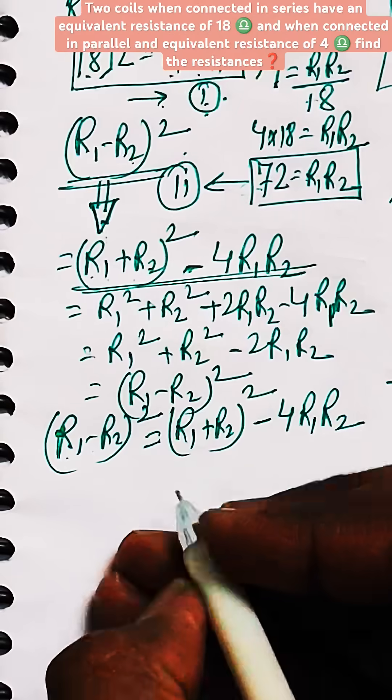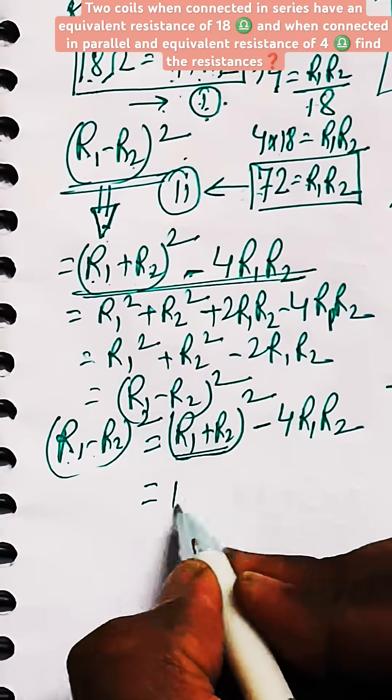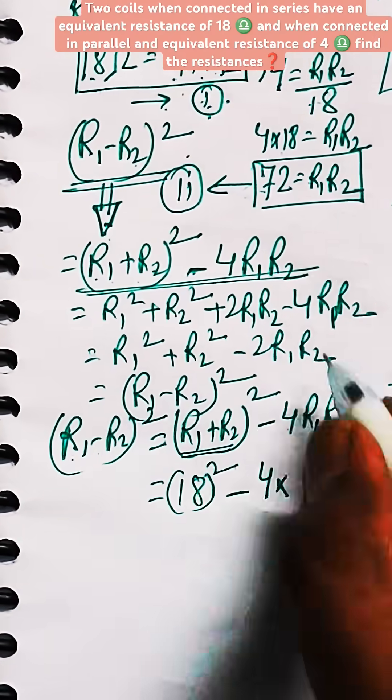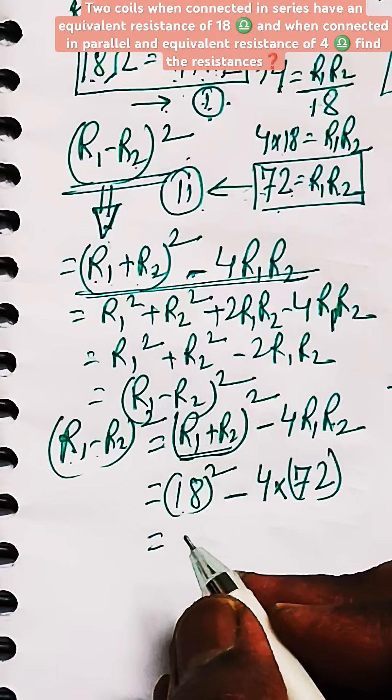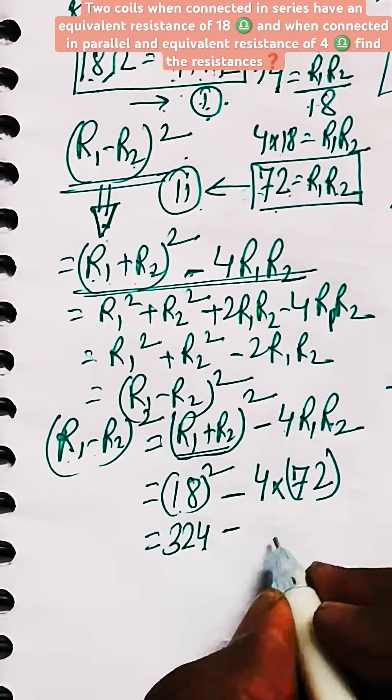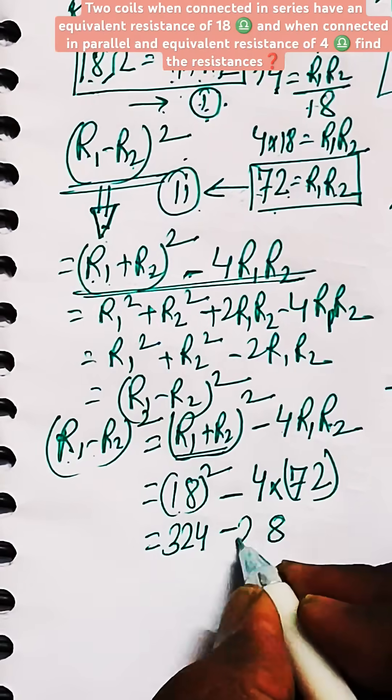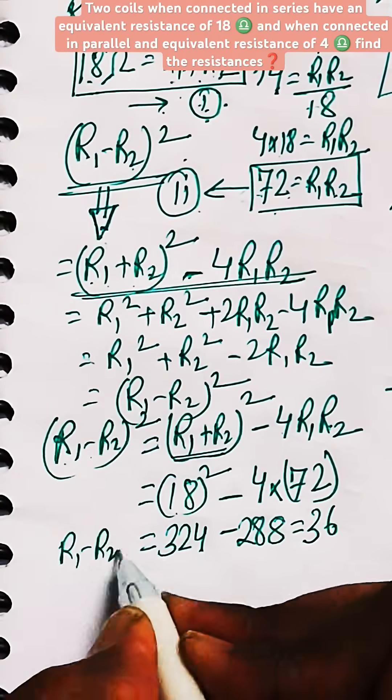And just use the values from equation number 1 and equation number 2 into RHS. So R1 plus R2, put the value of 18. So 18 square minus 4 times R1 R2. Put the value of R1 into R2 from equation number 2 as 72. Now 18 square, we put this value as 324, and 4 into 72 is 288.